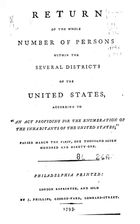Thomas Jefferson, then the Secretary of State, directed marshals to collect data from all 13 states — Connecticut, Delaware, Georgia, Maryland, Massachusetts, New Hampshire, New Jersey, New York, North Carolina, Pennsylvania, Rhode Island, South Carolina, and Virginia — and from the Southwest Territory. The census was not conducted in Vermont until 1791, after that state's admission to the Union as the 14th state on March 4th of that year.